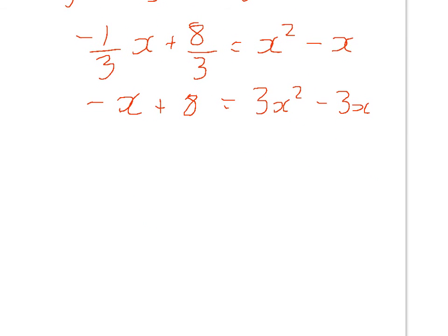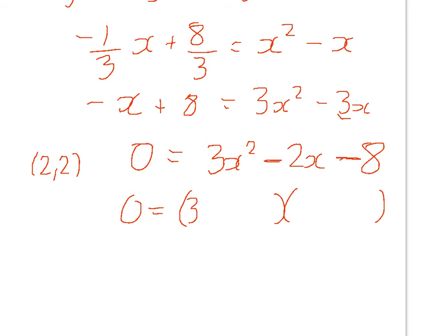If we collect everything together on one side, hopefully this is going to factorize. So 0 equals 3x squared, minus 3x and you're going to add on x, so that's minus 2x, and then take away the 8. Now we know from the first part of the question that this definitely passes through the point (2, 2), so we know that one number in the brackets when we factorize has got to be 2. Because it's 2 here, remember in the bracket it's always to make 0, so it's the opposite sign. Instead of being plus 2, it's going to be minus 2 in the brackets.